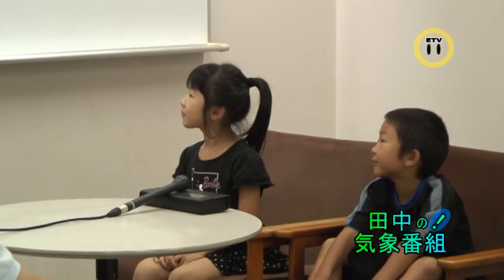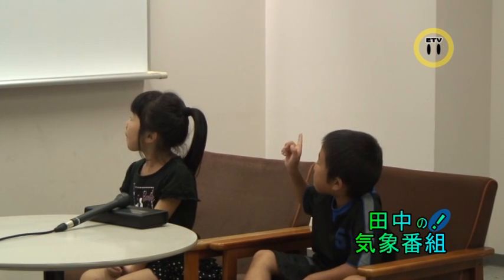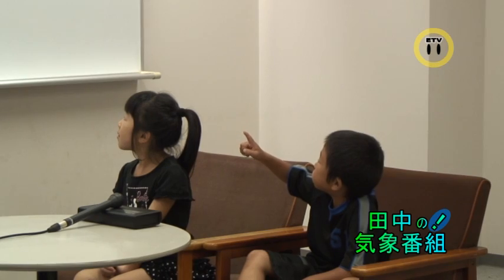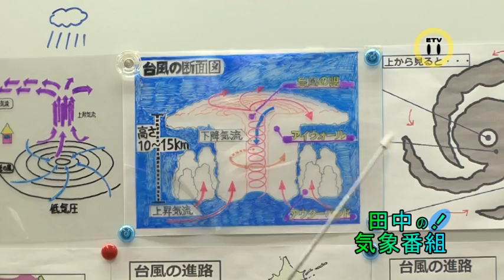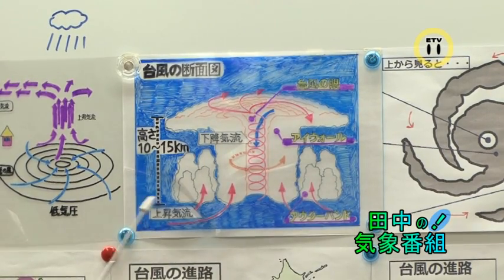じゃあ、次に台風について説明していきます。真央ちゃん、台風ってどんなものですか？——雨と風が混ざったみたいな。そうですね。台風は雨と風が混ざったようなもの。なので、雲があります。雲があるので、台風は低気圧です。